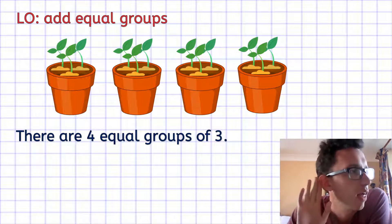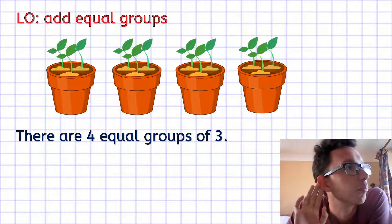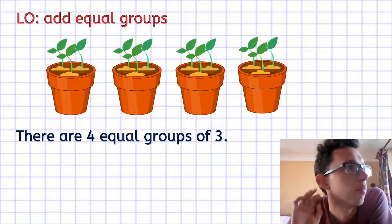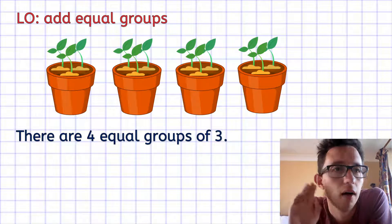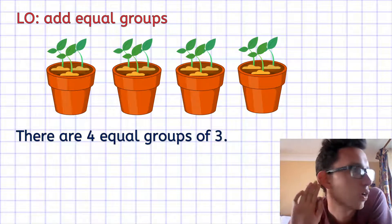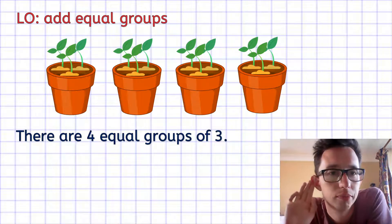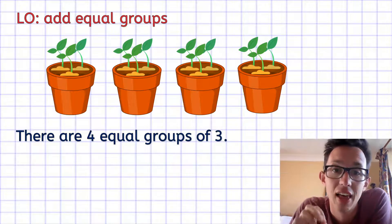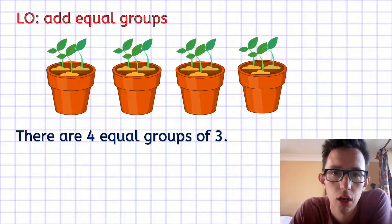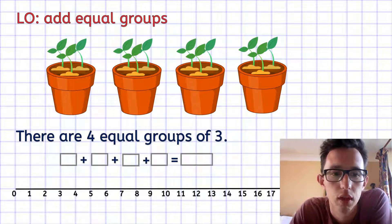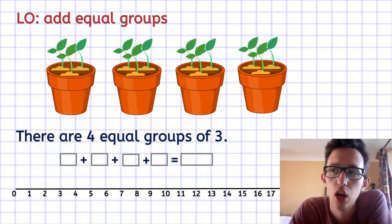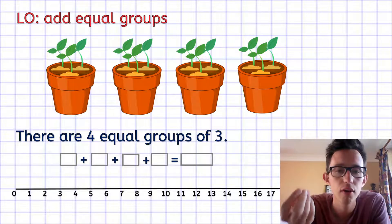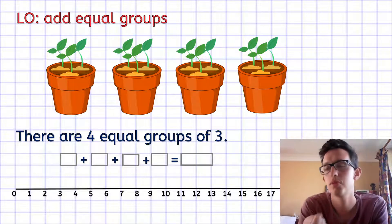Can you say that? There are equal groups of... It's really important that they're equal. So now we're going to look at the adding part. We know there are four equal groups of three.